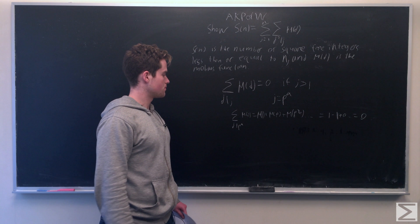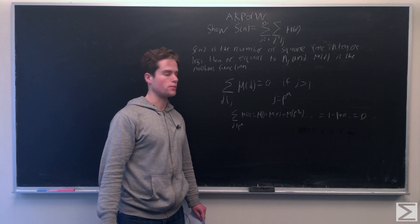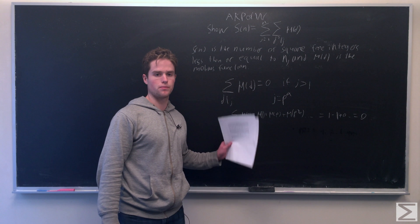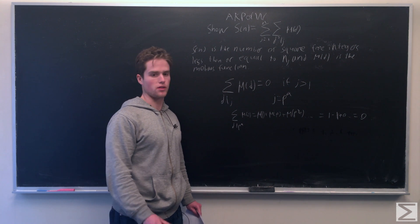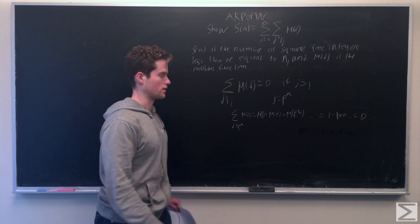And then assume, we can assume the sum is true for some m, and we want to prove it's true for m times p to the a, where m and p to the a are both relatively prime.